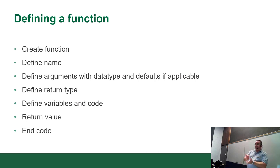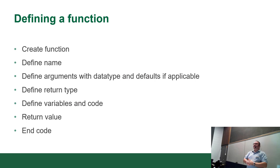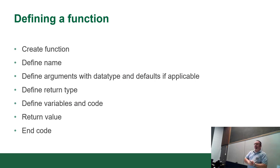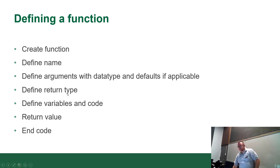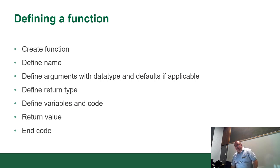When you define a function, tell me if this sounds familiar. You use the CREATE FUNCTION command. You give it a name, some arguments with data types and defaults, you define the return type, define some variables and code, you return the value and the code ends. Does that sound pretty much like a Java function? The only difference is where the return type is declared — in Java it goes at the top, before the function name.